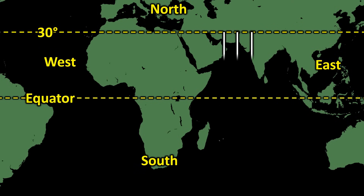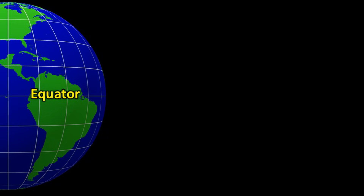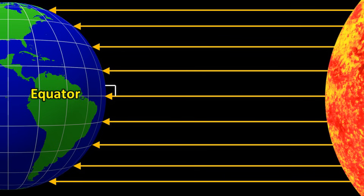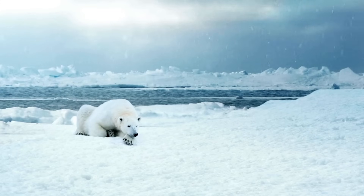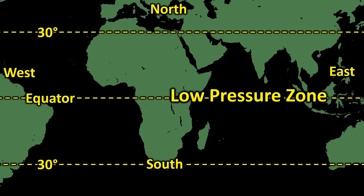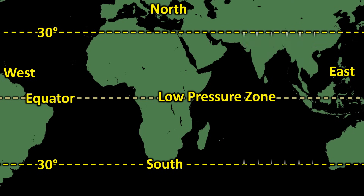Now let us understand why winds sometimes blow toward the equator, and sometimes away from it. Because the Earth is spherical, sunlight does not fall equally on all parts of the earth. At the equator, sunlight strikes the surface almost directly — nearly perpendicular — but as we move away from the equator, sunlight falls at an angle. This means that regions near the equator receive more heat from the sun, while areas farther away receive less, which is why temperatures drop drastically near the poles. Because of this stronger sunlight, the air near the equator becomes much warmer. As warm air rises, it expands and becomes less dense, creating a low-pressure zone near the equator. To fill this low-pressure area, air begins to move in from both sides — from the northern and southern hemispheres.